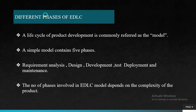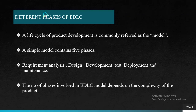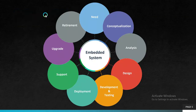EDLC phases: a life cycle of product development is commonly referred to as the model. A simple model contains 5 phases namely requirement analysis, design, development and test, deployment and maintenance. The number of phases involved in the EDLC model depends on the complexity of the product. This is the pictorial representation of the various phases in EDLC.